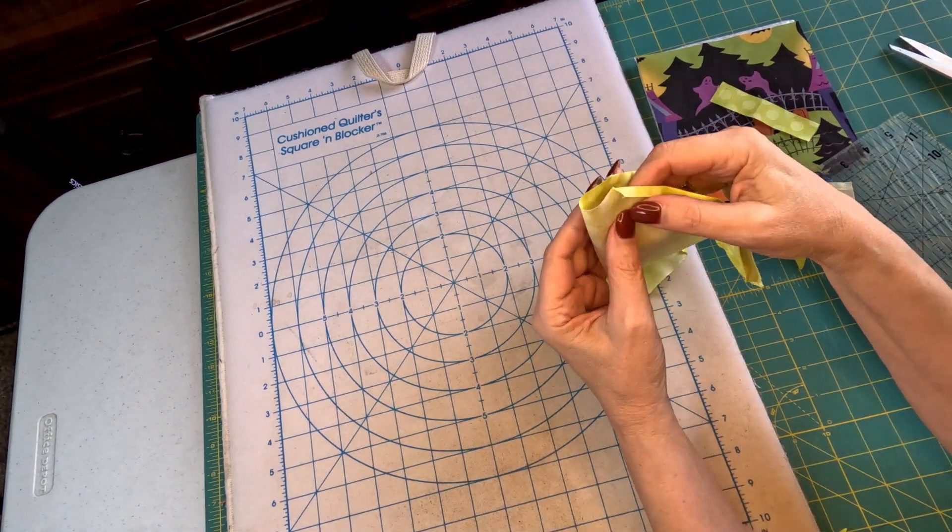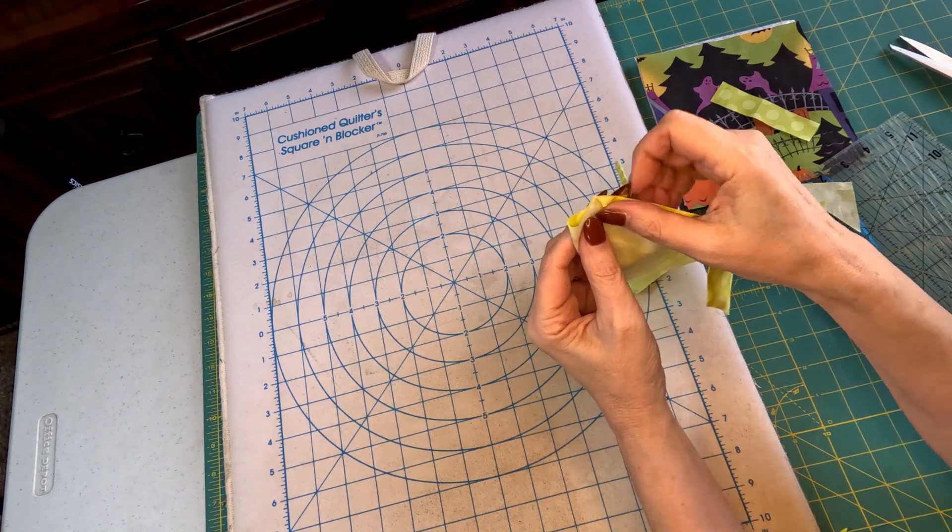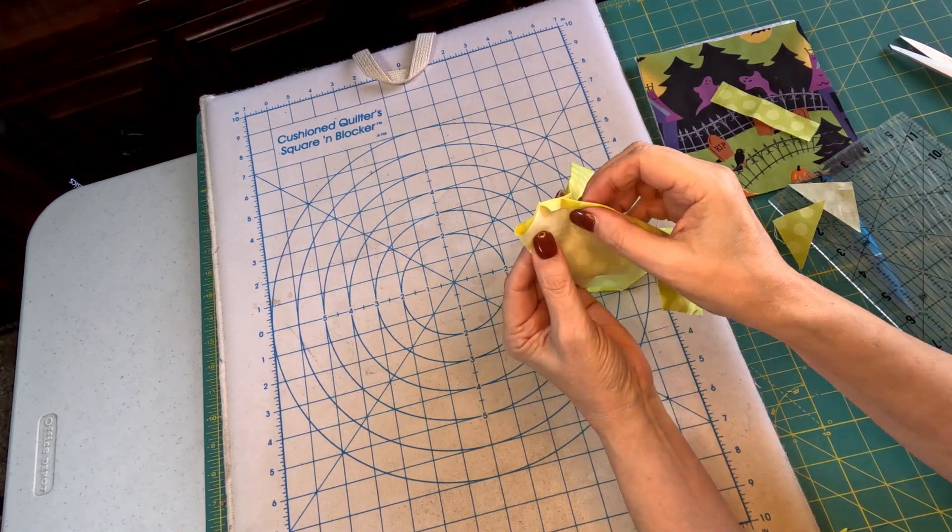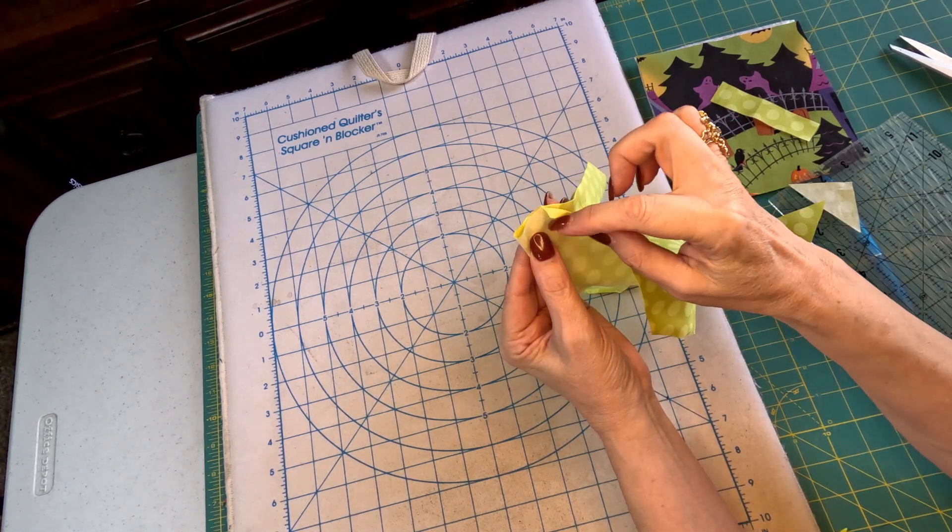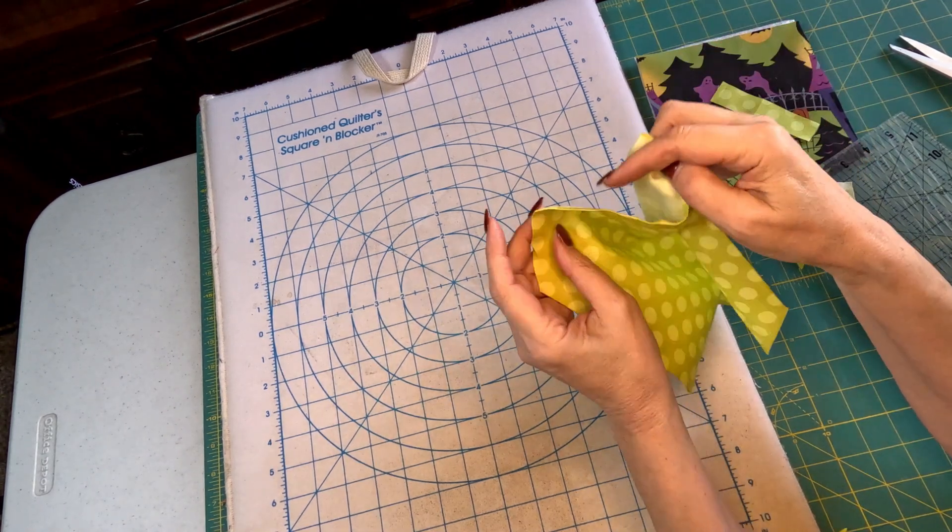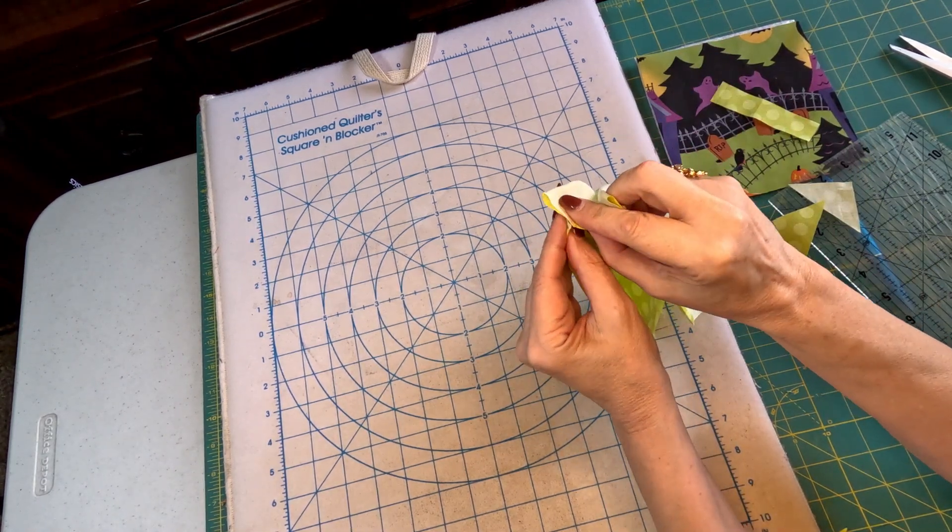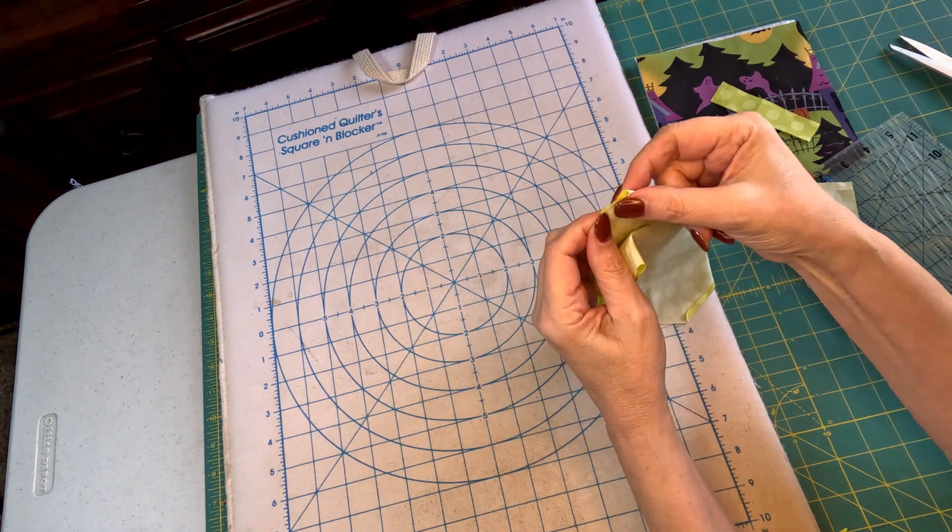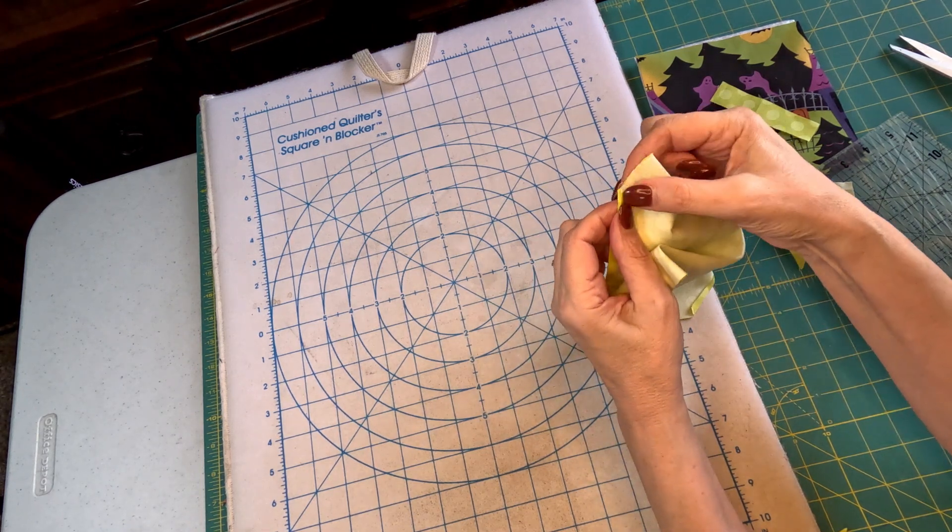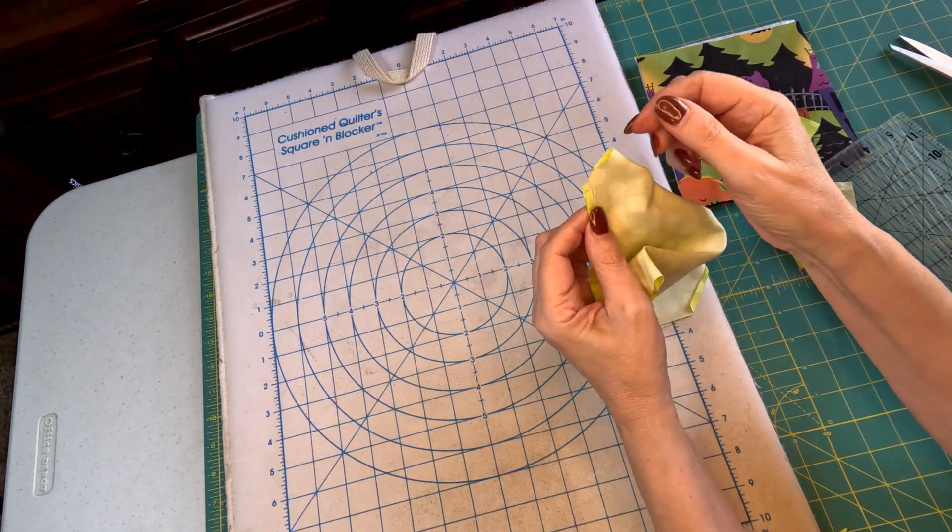Now we're gonna take it over to the sewing machine and we're going to fold each of these corners and just sew a quarter inch seam on each one of them. Fold them right sides together so that the edges meet up.